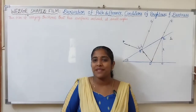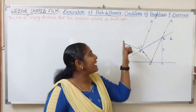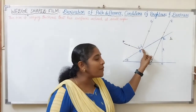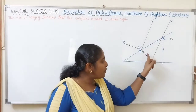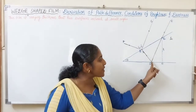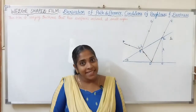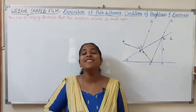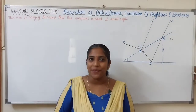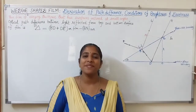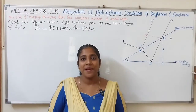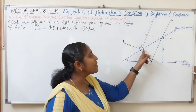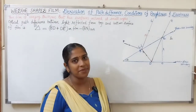How is interference produced in the wedge shape film? When light rays are incident on this wedge shape film, the light gets reflected from the top of the film, and some light will go downward and get reflected from the bottom surface of the film. Then these two reflected rays will superimpose each other, and this superposition of light will produce interference. To find the conditions for brightness and darkness, first we have to find out the optical path difference between light reflected from the top surface and bottom surface of the film.